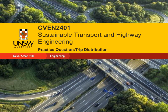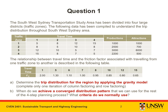This video walks through a practice question on trip distribution. As I read through the question, I'll highlight any key terms and information so that we can easily identify and refer back to these later. The South West Sydney transportation study area has been divided into four large district traffic zones. The following data has been compiled to understand the trip distribution throughout the South West Sydney area. The relationship between travel time and the friction factor associated with traveling from one traffic zone to another is described in the following table.